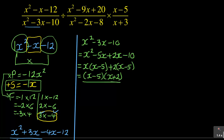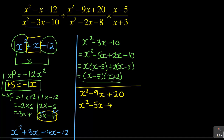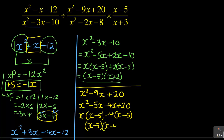We move on to the next one, which is x² minus 9x plus 20. Using the product sum again: the product is 20x² (positive) and the sum is negative 9. Looking for two numbers: I split it as x² minus 5x minus 4x plus 20. Then x is common giving x(x − 5), and negative 4 is common giving negative 4(x − 5). So the factorization is (x − 5)(x − 4).